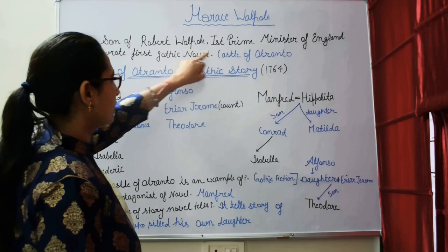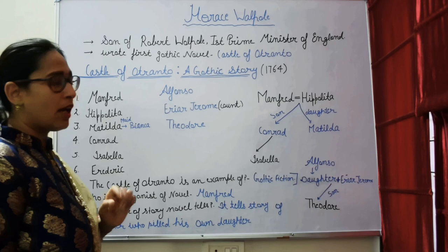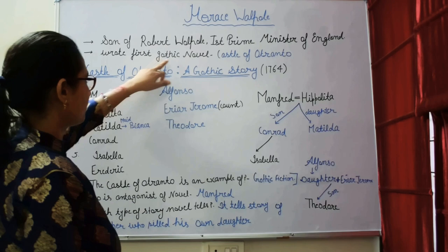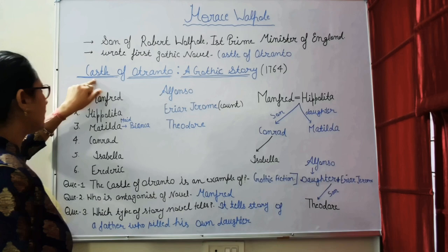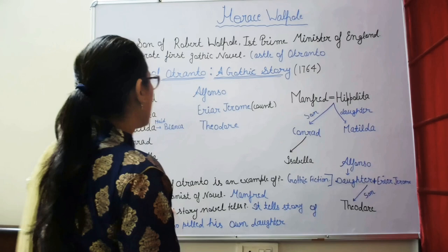What is the Gothic novel? Gothic novels have terror, mystery, and a horrifying setting. Horace Walpole's famous work Castle of Otranto has the subtitle 'A Gothic Story.'